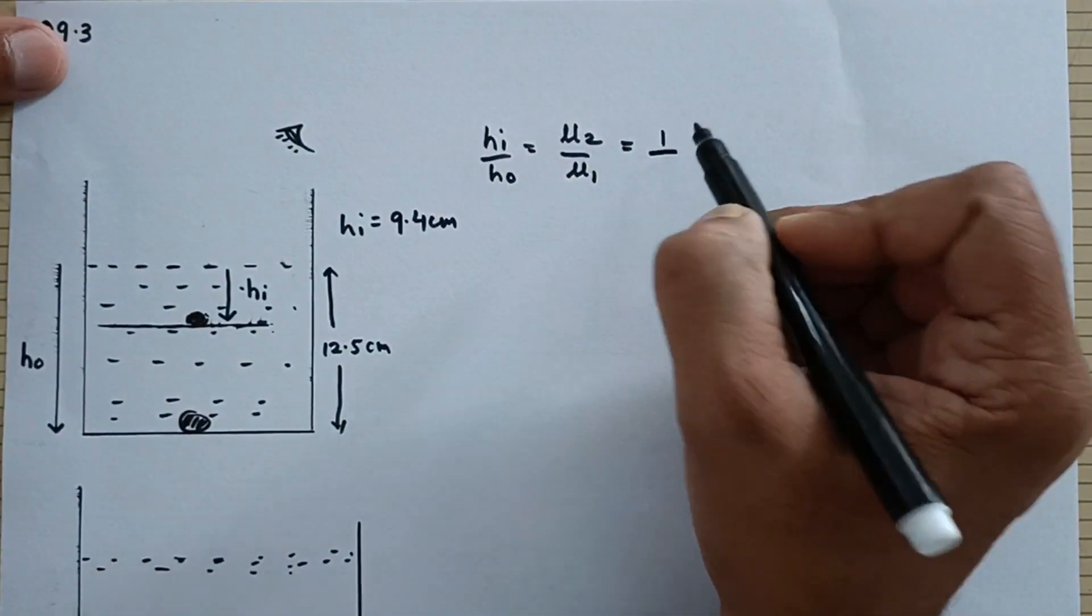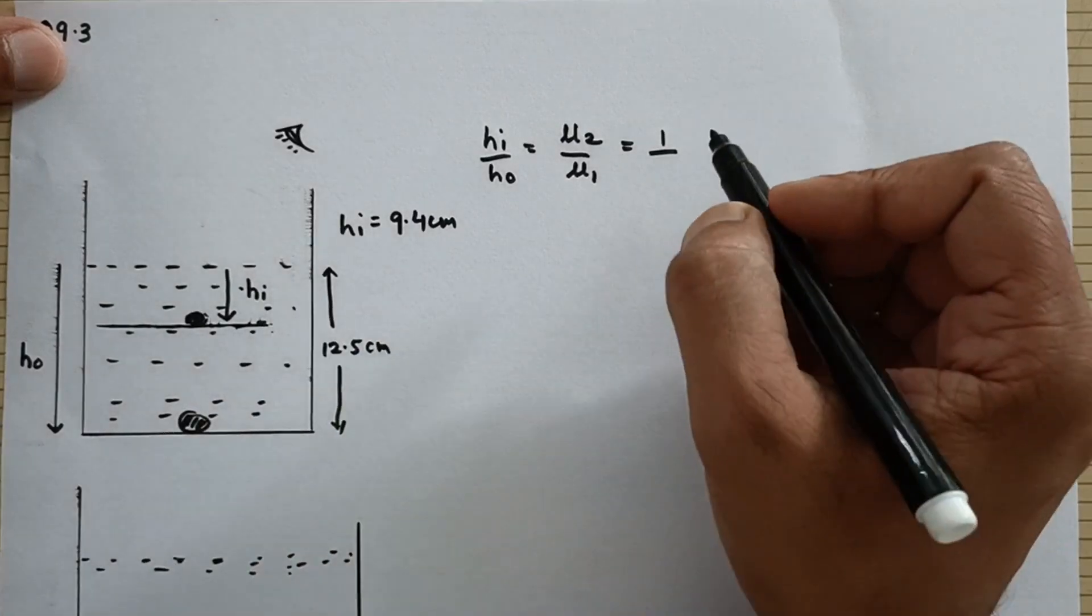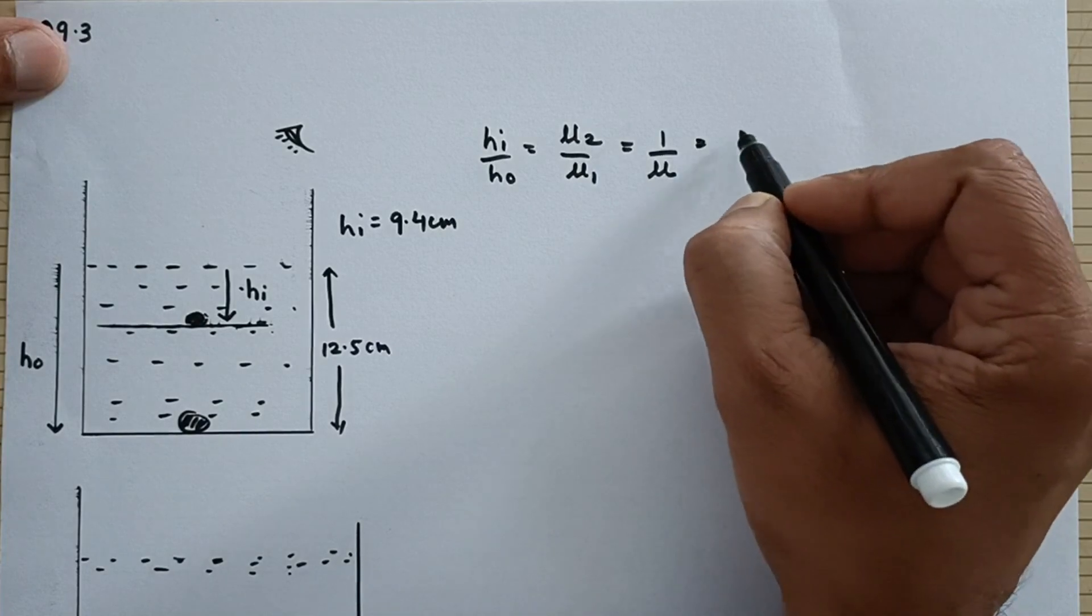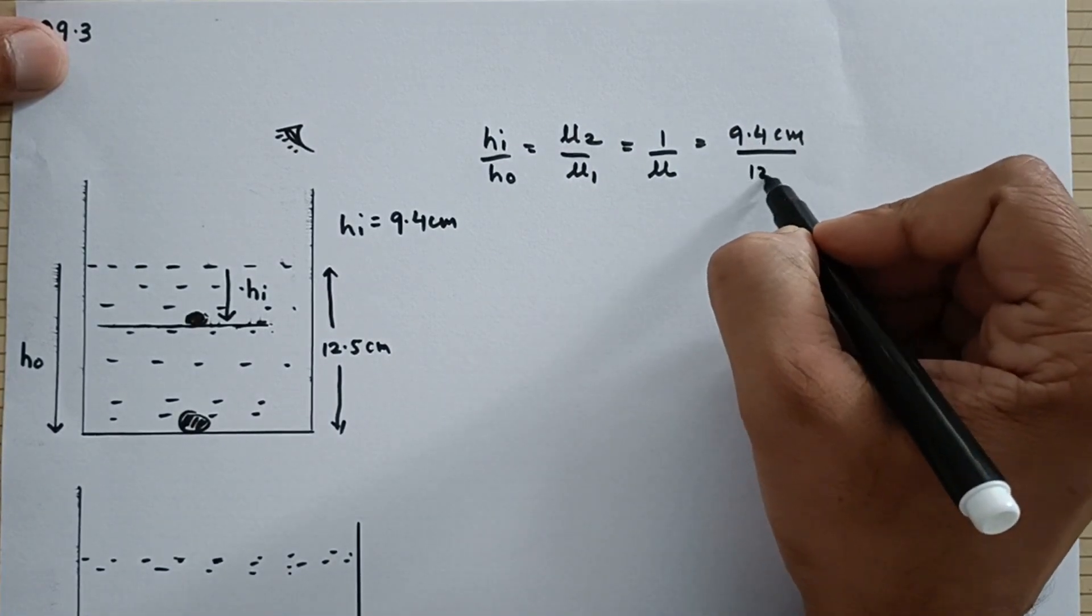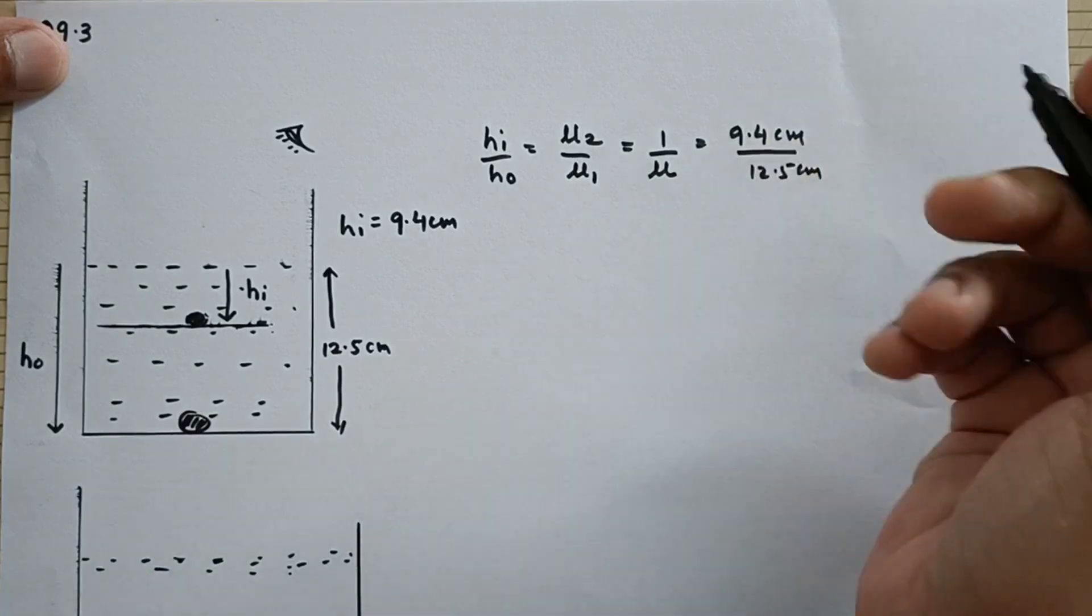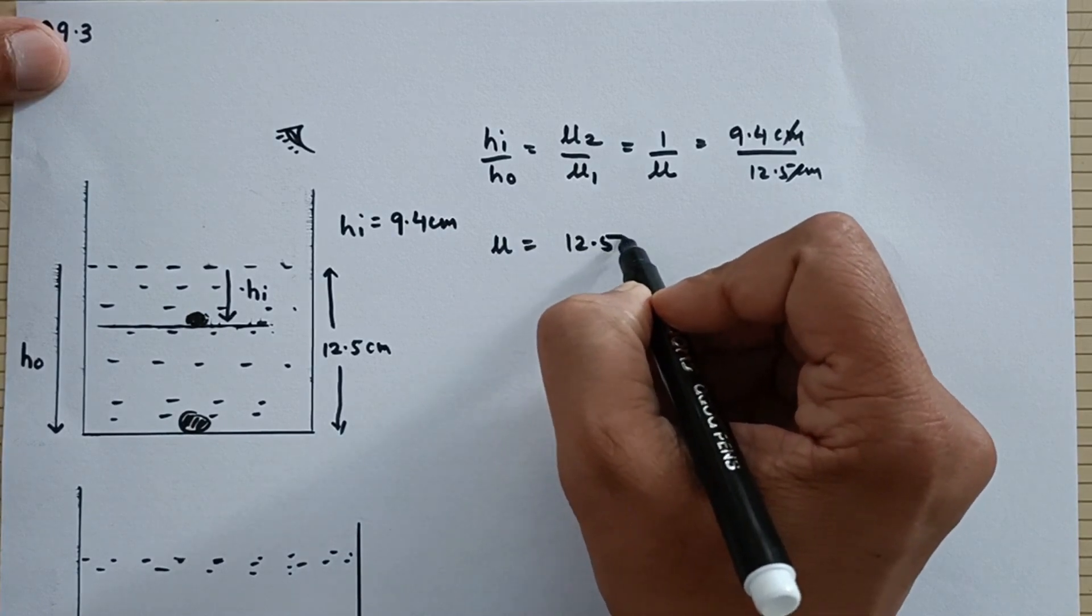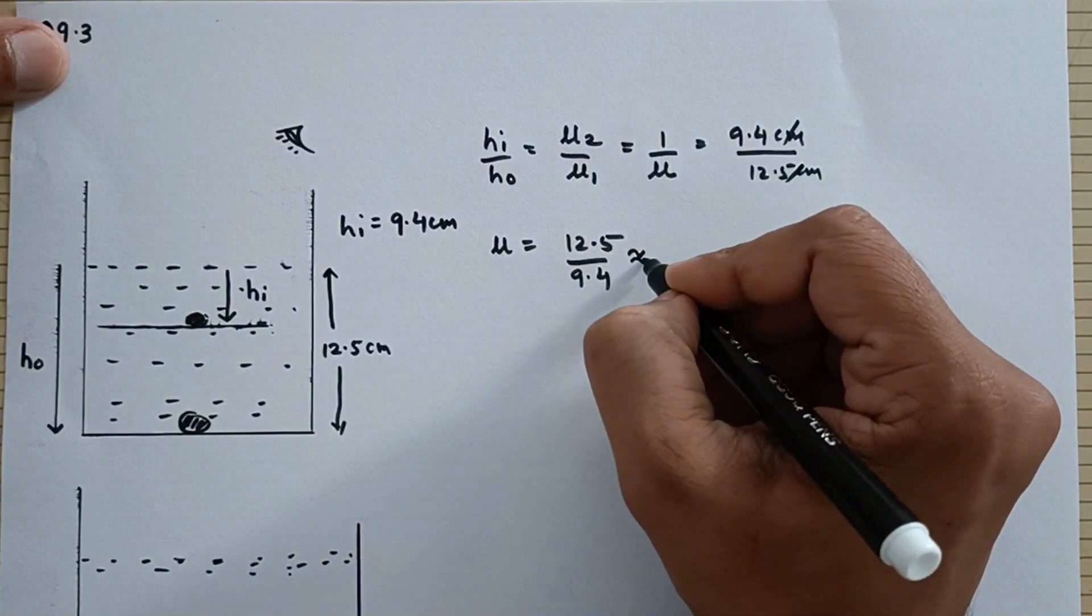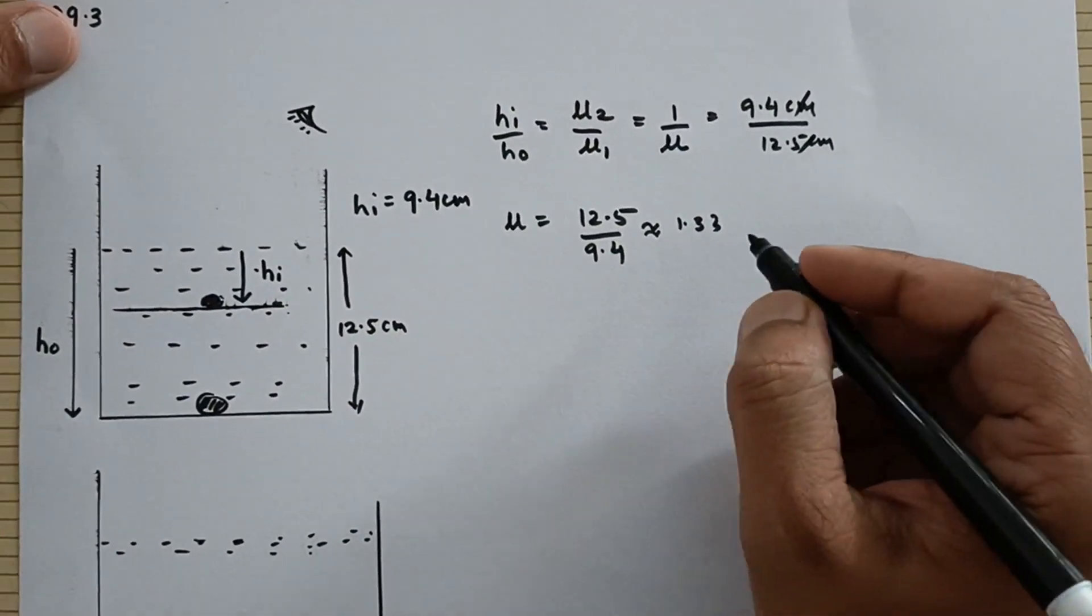This will be 1 divided by refractive index of medium 1 means where you have the incident ray that is mu. Let us call this as mu and that will be equal to 9.4 centimeter divided by 12.5 centimeter. Which means if you cross multiply mu that is equal to 12.5 by 9.4. This answer is approximately 1.33 and anyhow the refractive index of water is about 1.33.